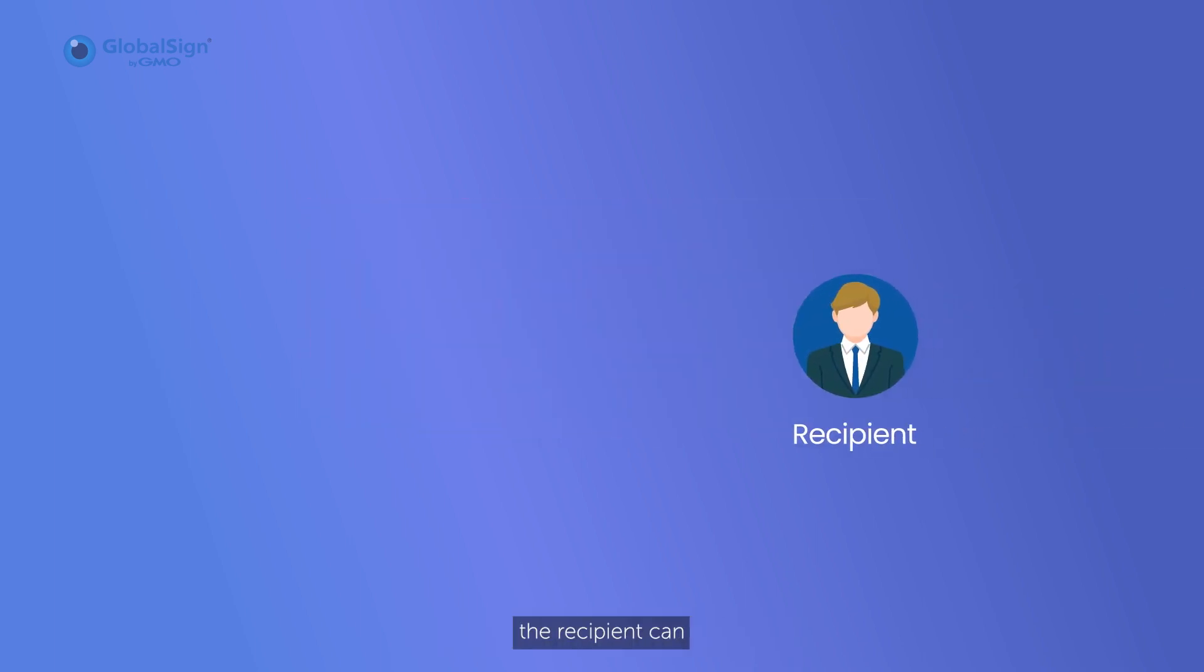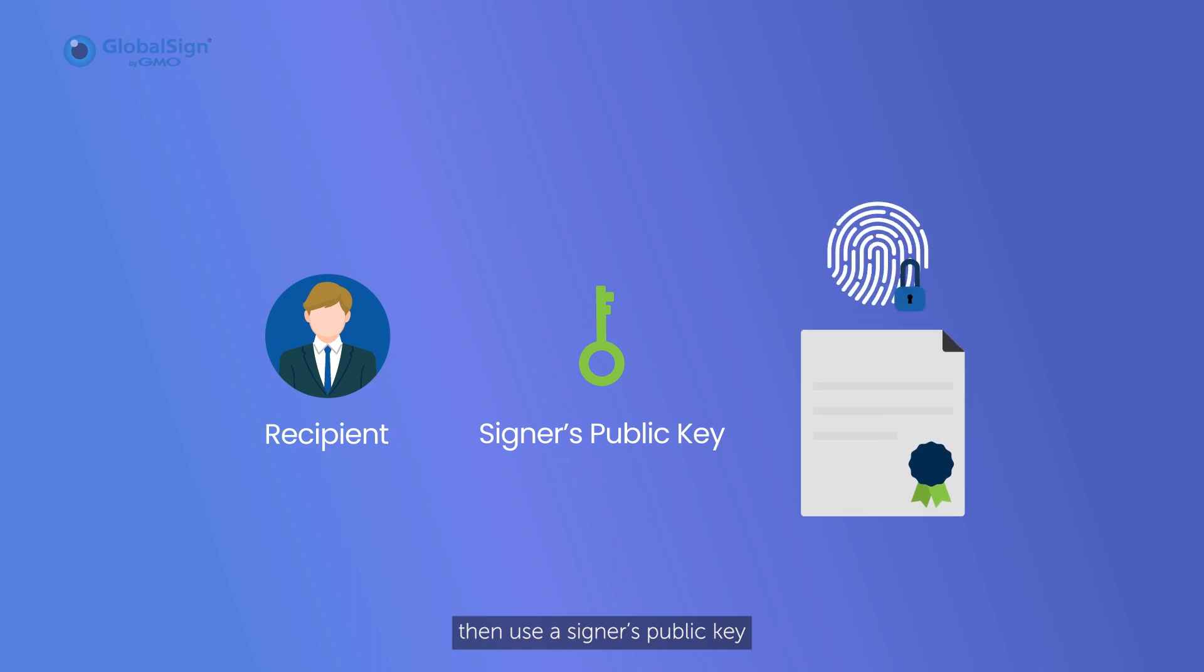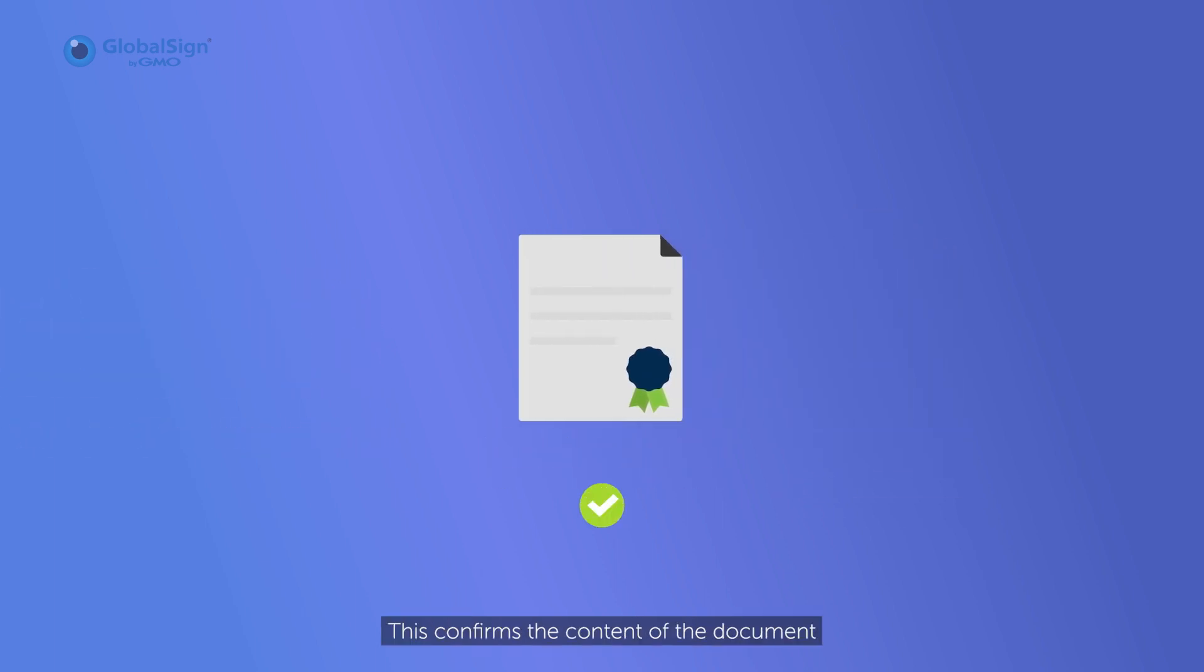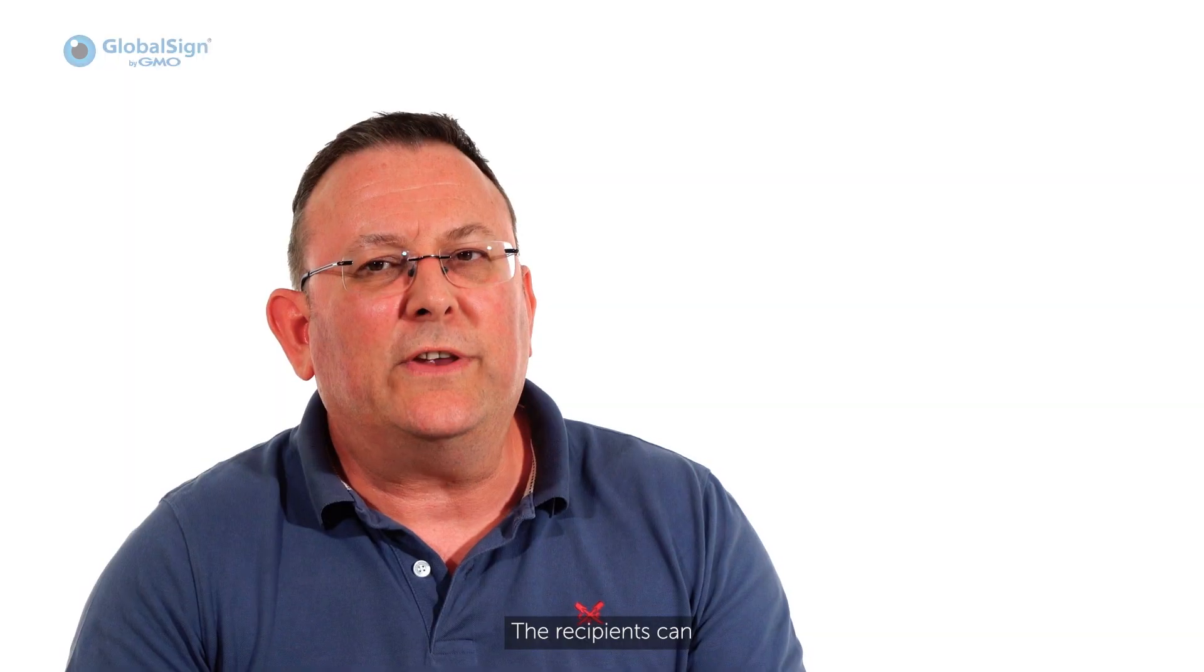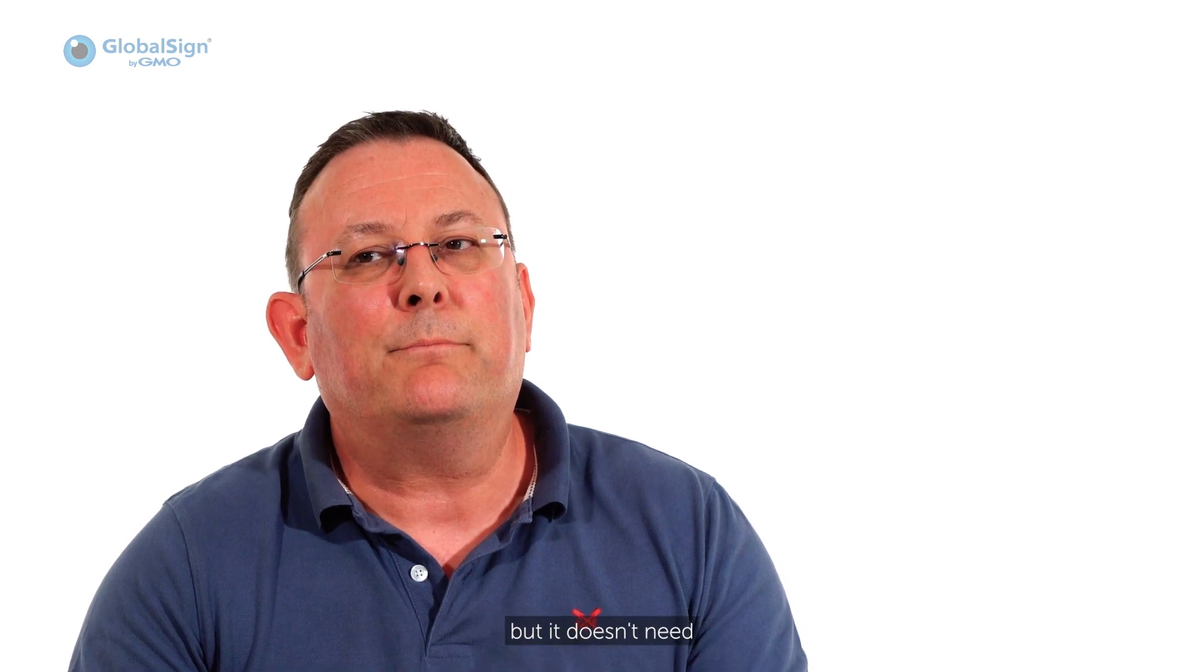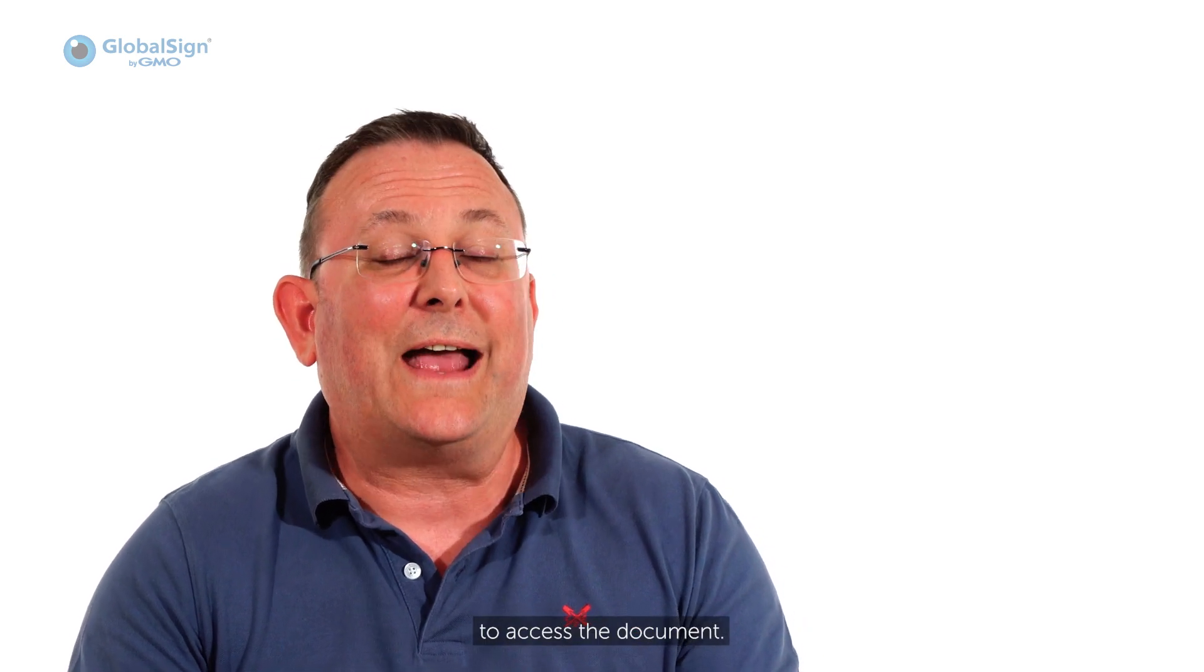When a document is digitally signed and sent to someone, the recipient can then use the signer's public key to decrypt the document. This confirms the content of the document and confirms that the people are who they say they are. Recipients can use this to identify the document's originality, but they don't need any additional software to access the document.